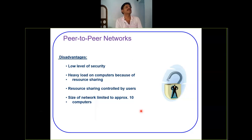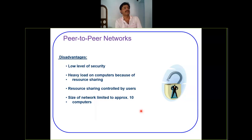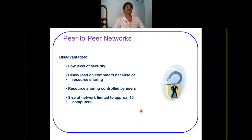The obvious drawback is a low level of security. Since there is no centralized control, there is effectively no security. If one terminal has a virus, it can easily be transmitted to other terminals in the network, and there is no control to detect it unless the terminal has its own built-in antivirus software. Additional software is required, which is why security is low in peer-to-peer networking.